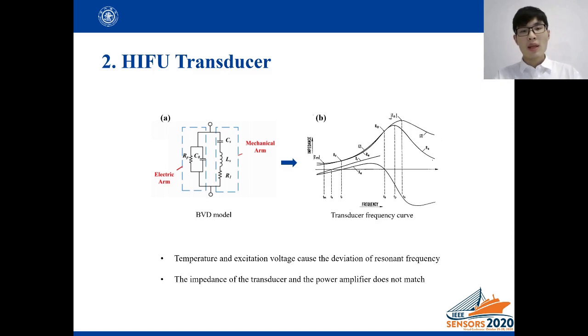The Butterworth Van Dyke model is composed of five discrete components. CS, LS, and RL compose the mechanical arm. CO and RP compose the electric arm. The series resonant frequency and parallel resonant frequency are the FS and FP in figure B respectively.